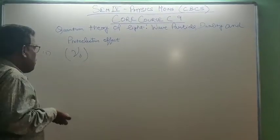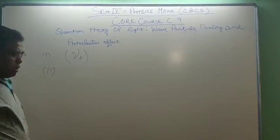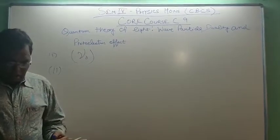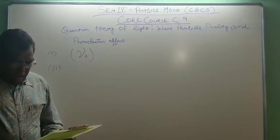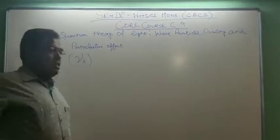Number 2: The velocity of ejected electrons depends upon frequency of the incident light and is independent of the intensity.